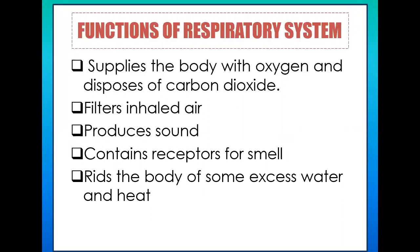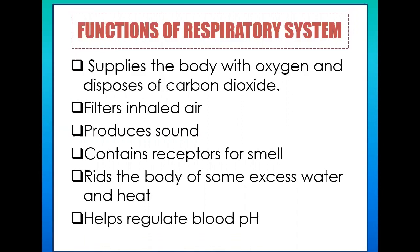Once air goes inside our body, you would notice that the air we exhale is hot compared to the air that goes inside. That is another function of our respiratory system. And lastly, the respiratory system functions for helping us regulate blood pH. Our respiratory system functions mainly for gaseous exchange in order to remove waste material — carbon dioxide — because if we increase the amount of carbon dioxide in our body, it causes the blood to become acidic. So we have to regulate blood pH by continuously removing carbon dioxide.